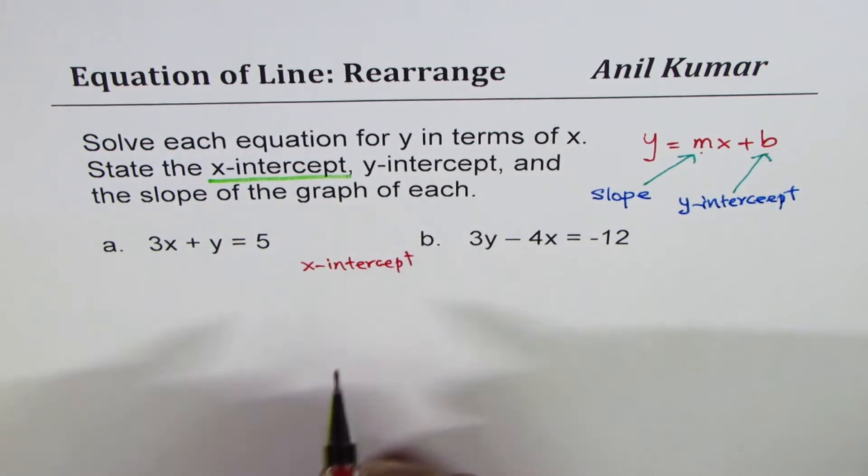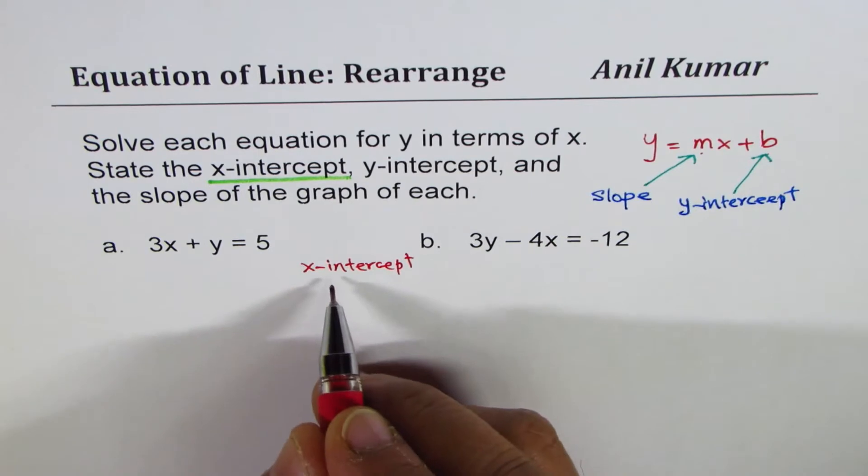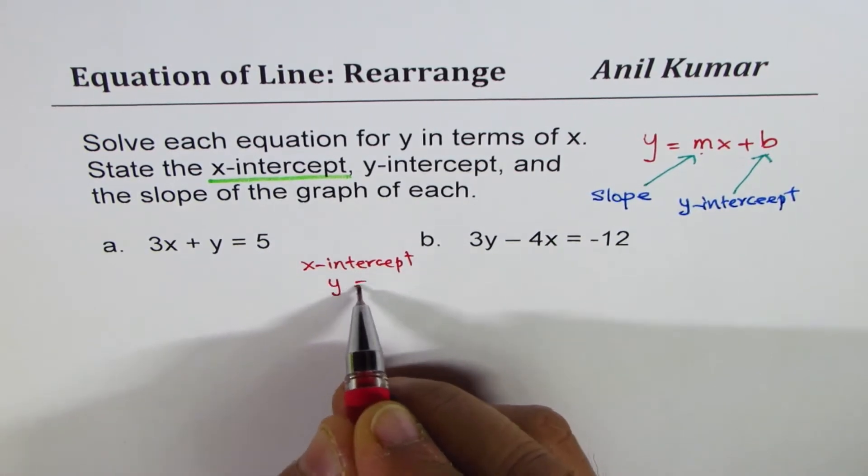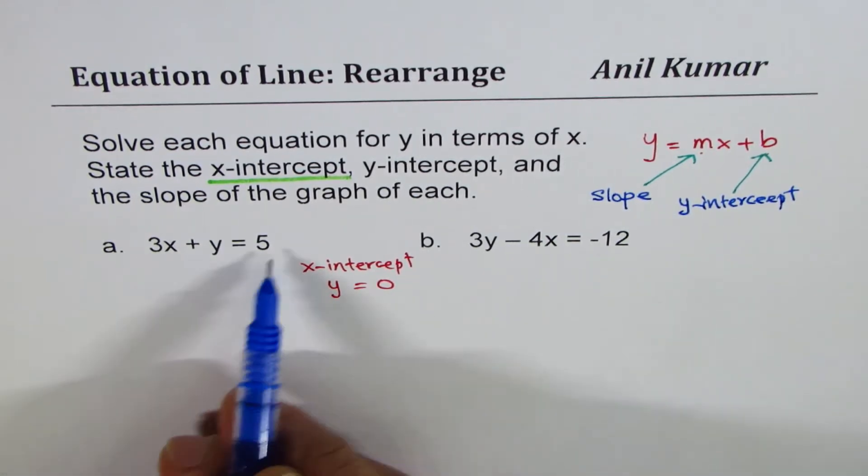What is x-intercept? It is a point where the line crosses x-axis. At that point, y is equal to 0. This is very important. So we will substitute y equals 0 in our equation.